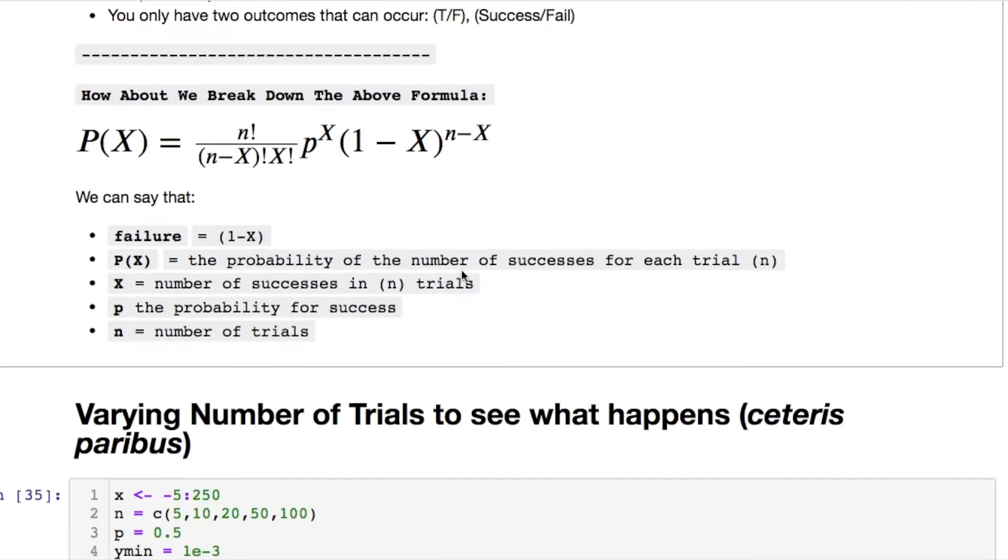The things you should know from this: the 1 minus x deals with your fails. The p of x is your probability of the number of successes for each trial n. Your x is your success. Your x is the number of successes in each trial of n. P is your probability of success, and n is just the number of trials.